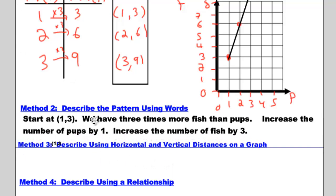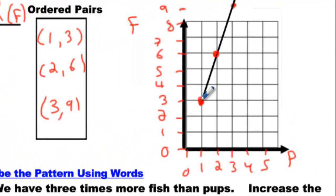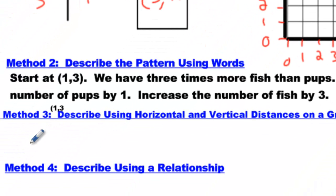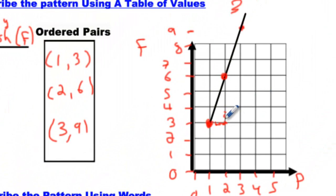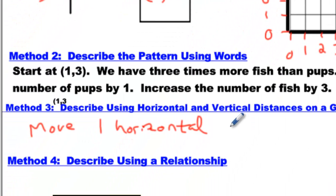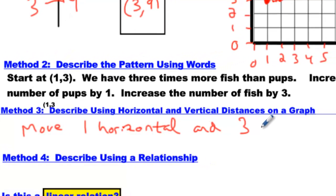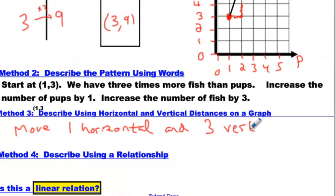It says describe using horizontal and vertical distances on the graph. If you go from this point to that point, you had to move horizontally one number — from 1 to 2, that's one number. So we can write: move 1 horizontal. And then you've got to go up 1, 2, 3 — from 3 to 6 is 3 numbers. So we write: and 3 vertical. That's another way of expressing a pattern.